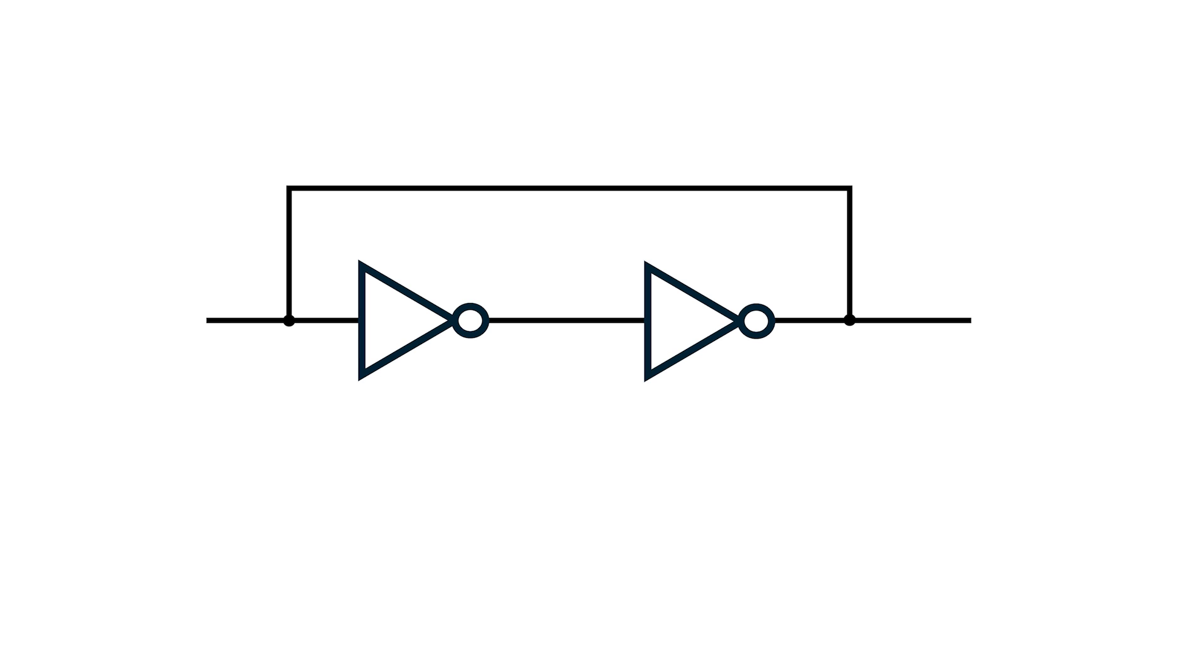If we use two inverters, the circuit is stable in two configurations: 0110 and 1001. This is bistable and is the basis for registers and static RAM cells used in computers.